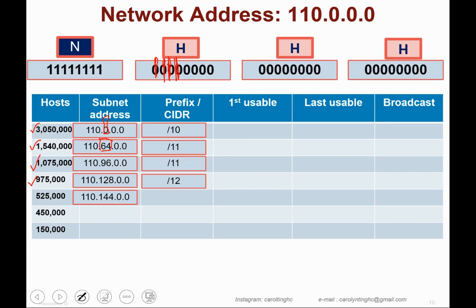For 525,000 hosts, the addressing table again suggests slash 12. Two to the power of 4 is still 16. Adding 16 to 144 gives 160, so the next subnet address is 110.160.0.0.